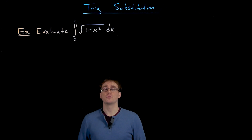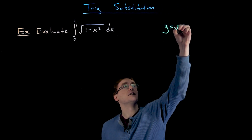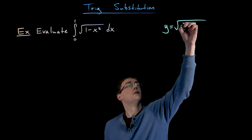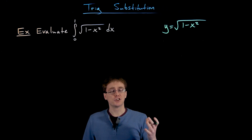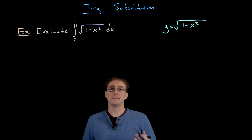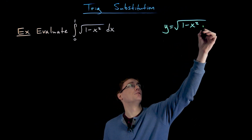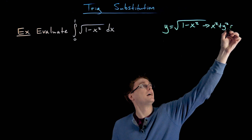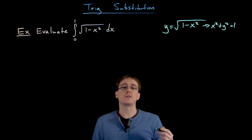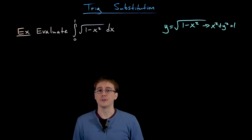If we think about the function we are integrating, the square root of 1 minus x squared, we can also write that as y equals the square root of 1 minus x squared. If we square both sides and rearrange, we get x squared plus y squared equals 1, which we should recognize as our unit circle.